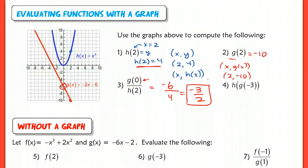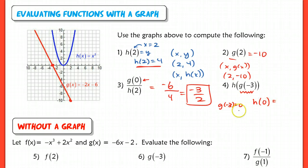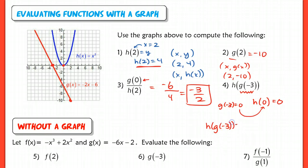For number 4, h of g of negative 3 — this looks confusing, but really all it's saying is use g of negative 3 as the input for h. So find g of negative 3 first: at g of negative 3, I'm at zero. So this is the same as finding h of 0 — that zero becomes the input. h of g of negative 3 is actually h of 0, and at h of 0, I'm just at zero. So h of g of negative 3 is equal to zero, which is equivalent to h of 0 equals zero.